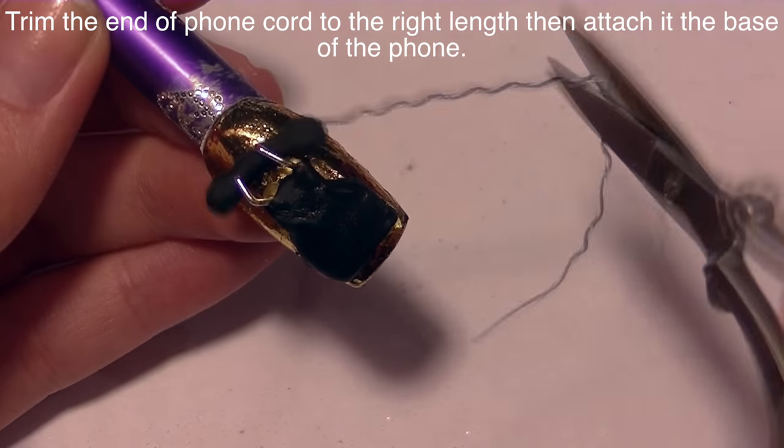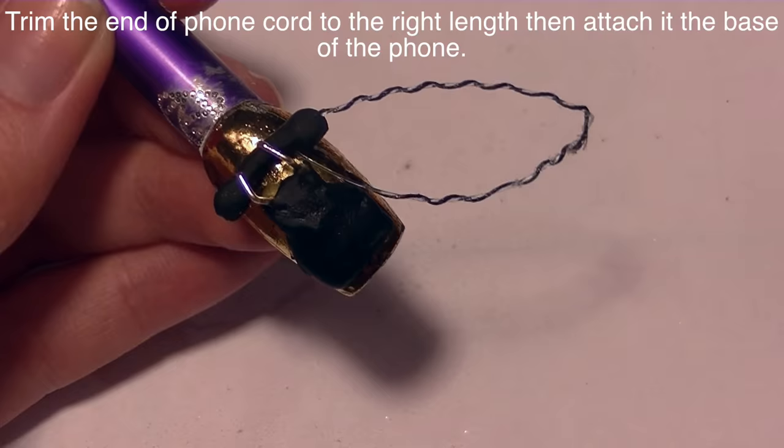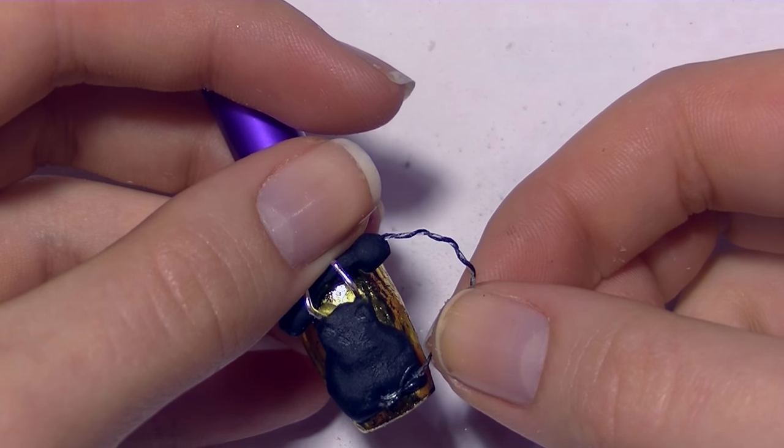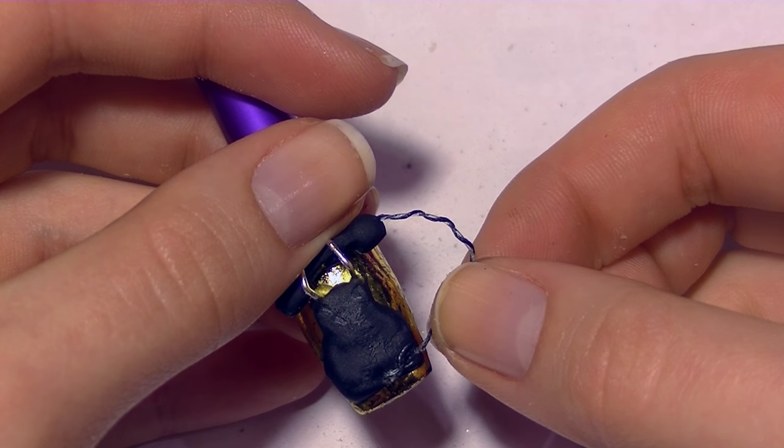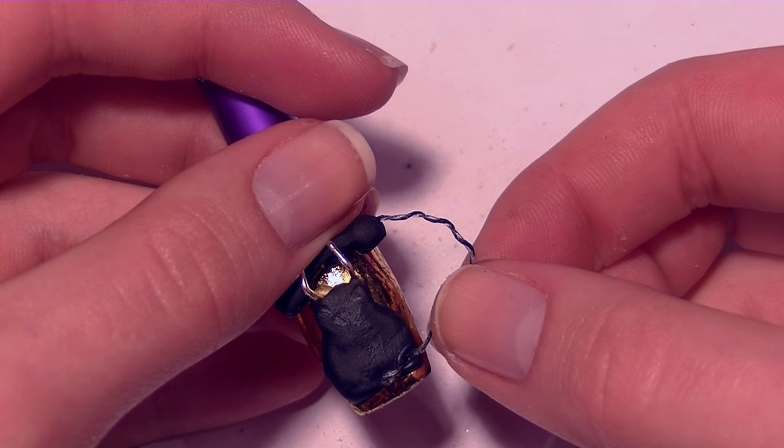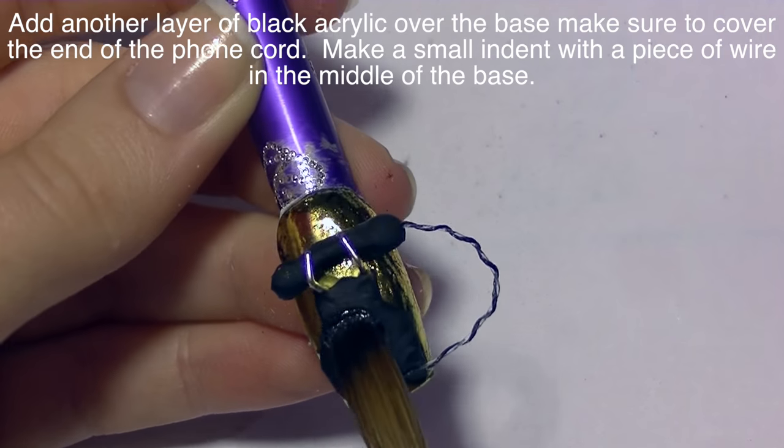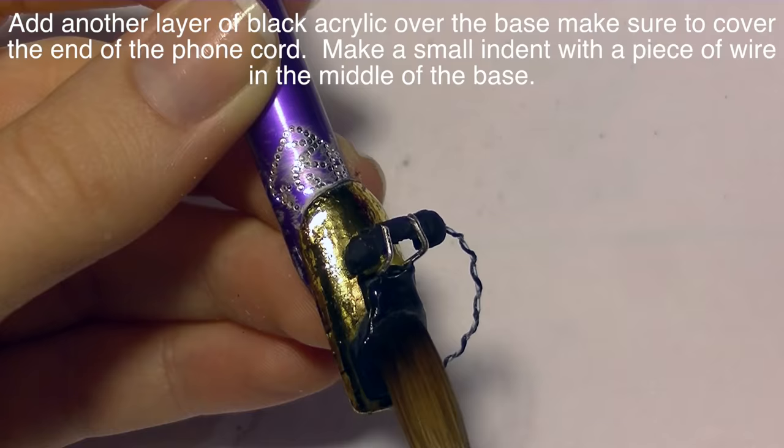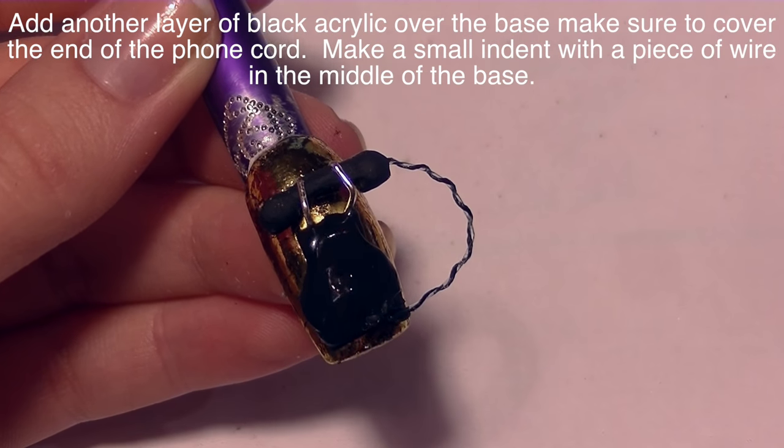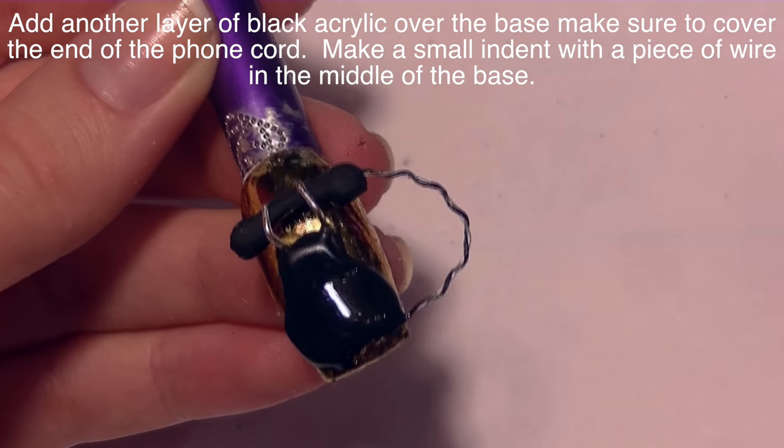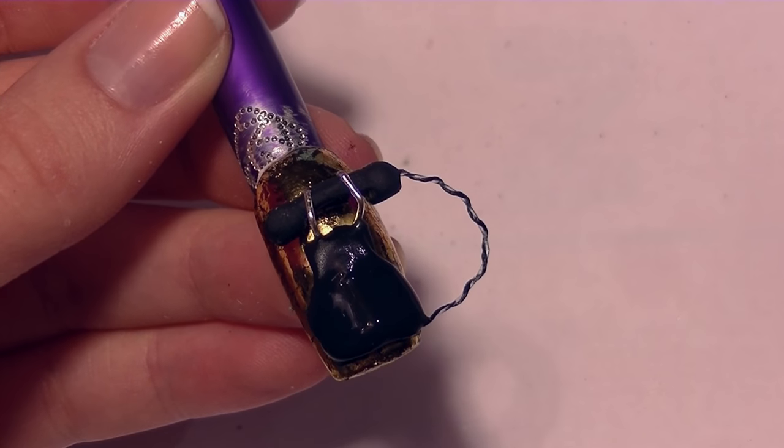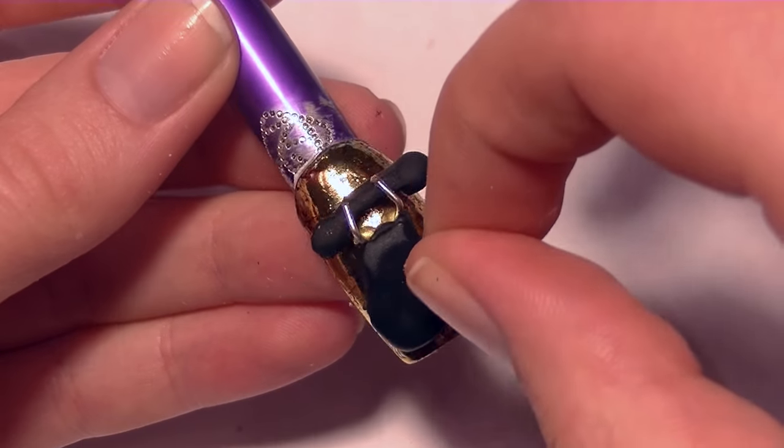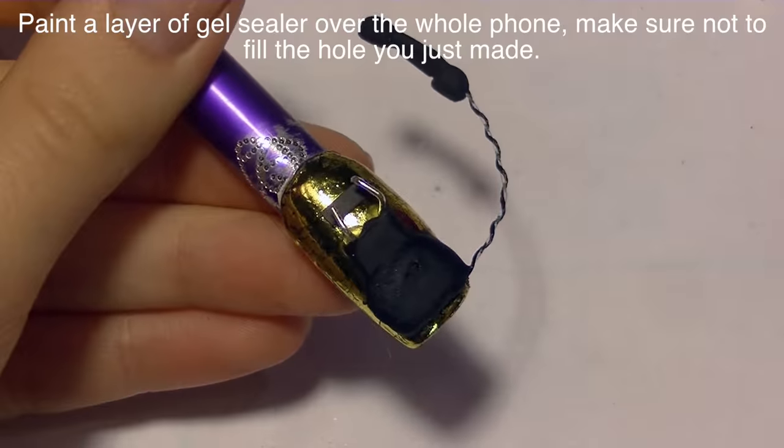Now I'm going to cut the length of my phone cord to the right size. My scissors was not wanting to cut it, eventually it did go through. Then I'm going to attach the end of it to the base of my phone. Once that is firmly attached, I'm going to be adding another layer of black acrylic over the top of the base. This is where you're going to want to add your thickness and make sure it's smooth and perfect. Then poke a hole into the center of that semi-wet acrylic.